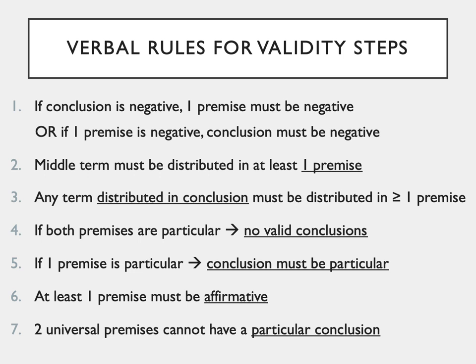Now that you know the middle term and distribution, let's move on to the steps you can take to use the verbal rules to determine validity. For a conclusion to be valid, the syllogism must pass all of the rules. If it fails at any step, it is invalid and you can stop there.